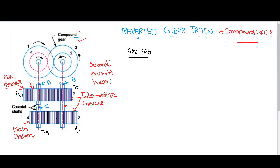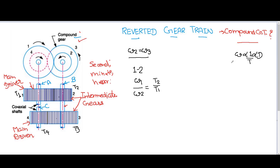Now we will look at one meshing pair at a time. Gear number one and gear number two are in meshing with each other, and gear number four and gear number three are in meshing with each other. For gear number one and two, one is my driver and two is my driven gear. From the law of gearing, omega one divided by omega two is equal to T2 divided by T1, since angular velocity is inversely proportional to the number of teeth.